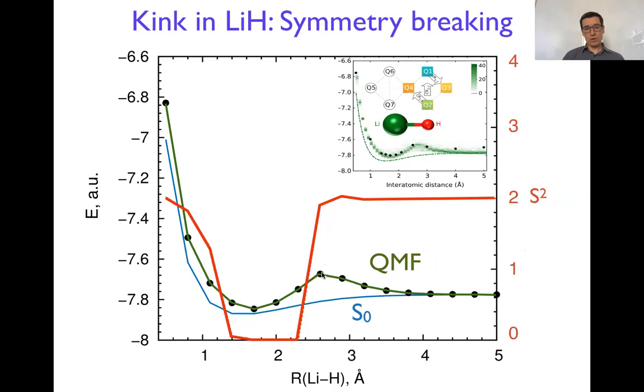And we saw that when the kink happens in the mean-field theory, completely in parallel with the IBM results, we have spin jumping from the singlet state here to the triplet state because triplet state has a eigenvalue of s squared two and the singlet is zero. So that's what happens here. Kink is going along with essentially changing the spin and the switching between the two states.